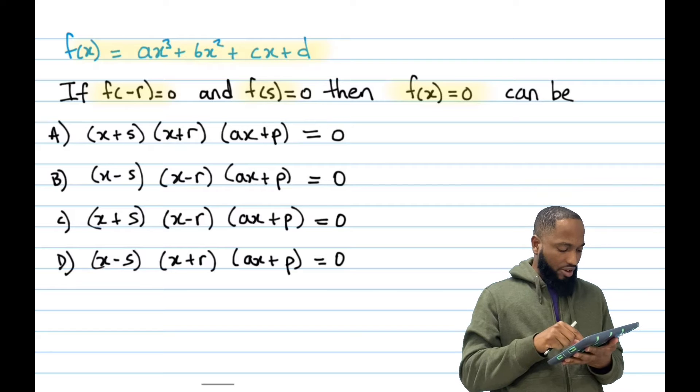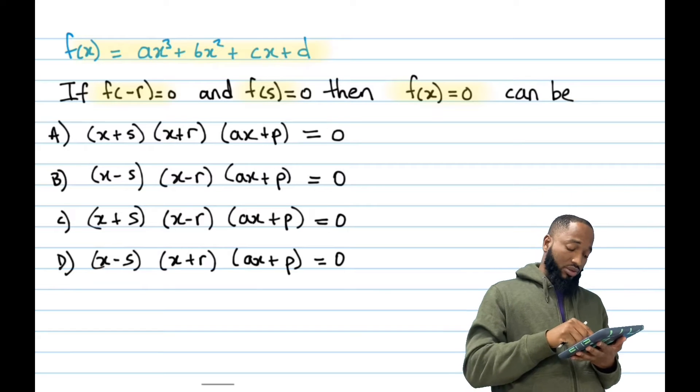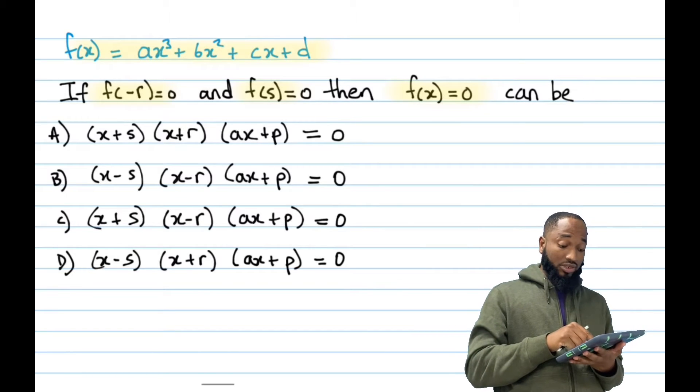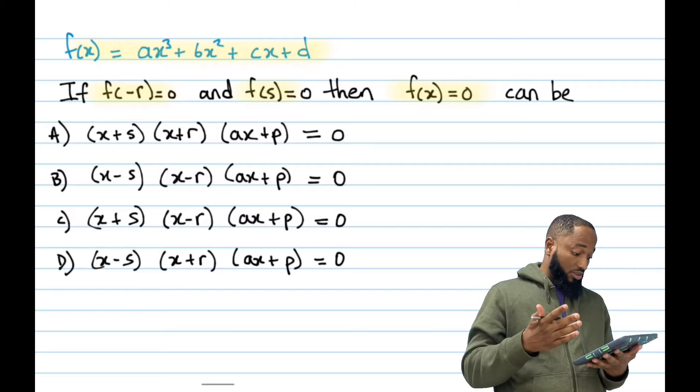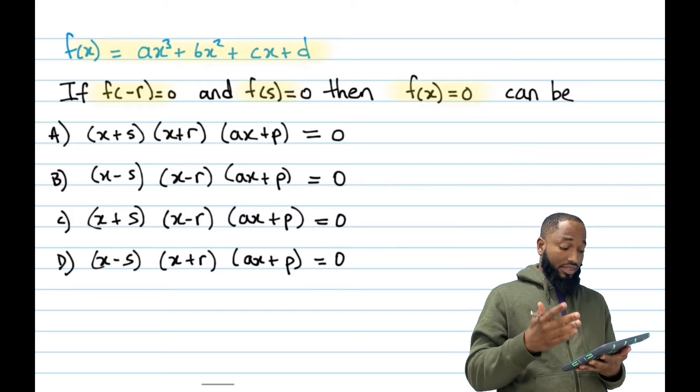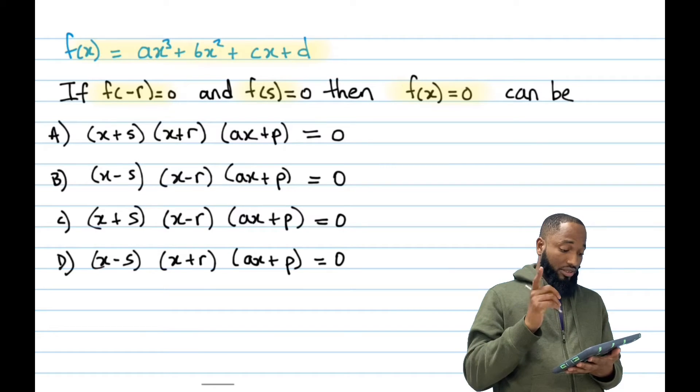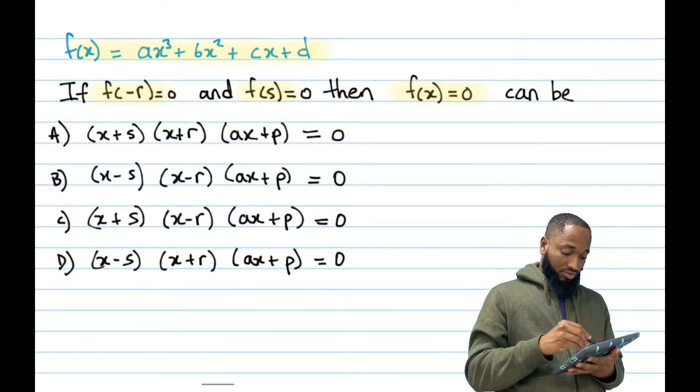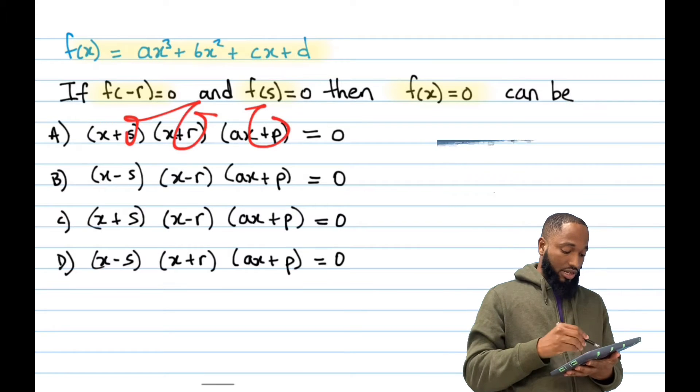If f of negative r is equal to 0 and f of s is equal to 0, then f of x equal to 0 can be expressed as x. This is a lot of letters. But it's actually a really simple question. Look at all the letters in this question.